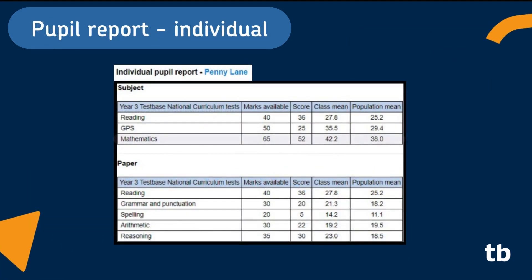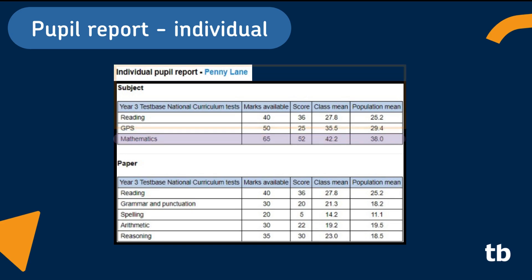Moving on to individual pupil reports and comparisons. Use this first table to view individual performance in each subject area. You can compare a pupil's performance with the class mean as well as that of the population. Here, Penny has a score in maths of 52 out of 65. The class mean average was 42.2 and the total population was slightly lower at 38. This means that Penny is scoring higher than both her classmates and the population average of other children who have taken the Testbase test.